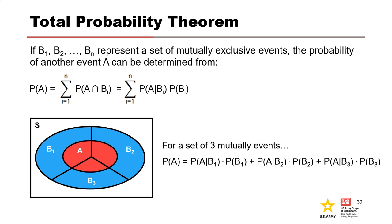The final topic in this section is the total probability theorem, a fundamental rule relating marginal probabilities to conditional probabilities. It expresses the total probability of an outcome that can result from several distinct events. For a finite set of mutually exclusive events B1, B2, and so forth of a sample space, the probability of any event A can be calculated by multiplying the conditional probability of A given B by the probability of B at each interval and summing the products over all intervals. This is what we do when working through an event tree to calculate the annual probability of failure: the probability of a given load is multiplied by the probability of failure given that load, done for all loading conditions, and then summed to get the total probability of failure.